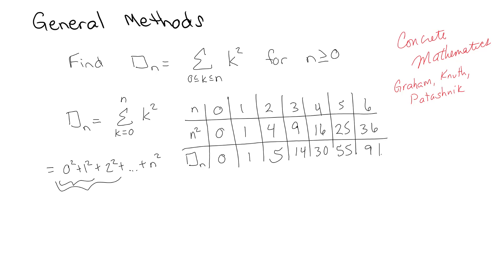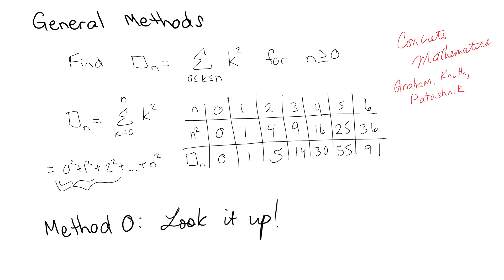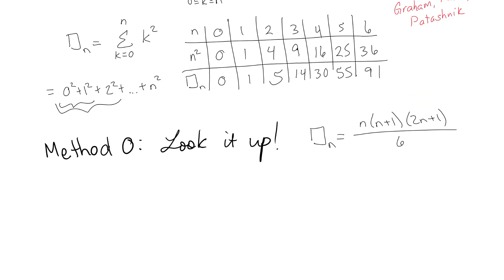We have an idea of how it works — if you can't even write out a simple example you'll never know if it's functional. The book talks about different methods for solving this, and I love their first one: Method Zero, which is simply look it up. This is a pretty famous summation, and looking it up gives you n times (n+1) times (2n+1) over 6. I actually recorded a fifth of this video with the wrong denominator, so I'm redoing it — it's over six, not over two.